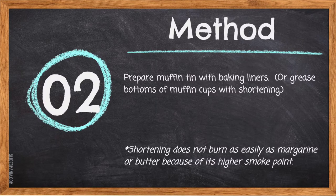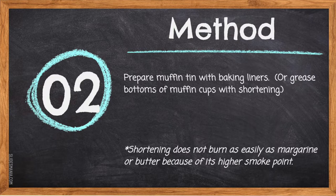Step two: prepare muffin tin with baking liners or grease bottoms of muffin cups with shortening. Shortening does not burn as easily as margarine or butter because of its higher smoke point.